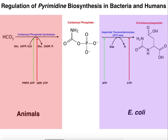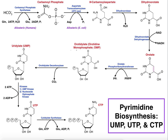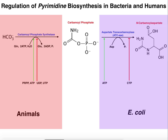As mentioned in the previous video, where we discussed the pathway for the synthesis of UTP and CTP pyrimidines, the regulatory control point — specifically the committed step that's regulated allosterically — is different between animals and E. coli, or bacteria in general.